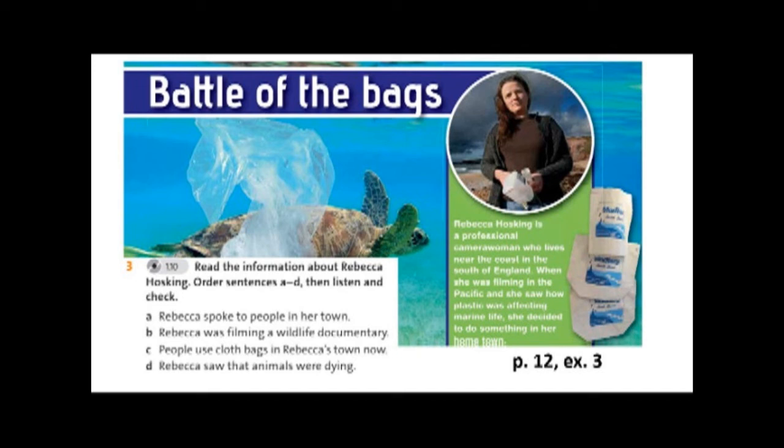People throw away plastic but they don't think about where it goes. Unfortunately too much plastic goes into the sea and there are now millions of tons of plastic in our oceans. Sometimes animals such as seabirds, for example, think that it's food and they eat it — it poisons them.